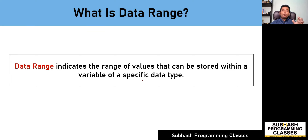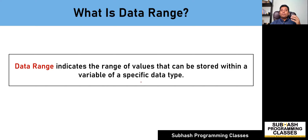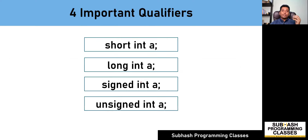Before looking into the different possible values for different data types, we will first understand what is meant by these four important qualifiers: short, long, signed, and unsigned. Let me explain these one by one.